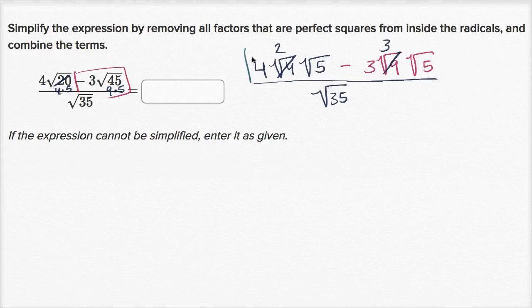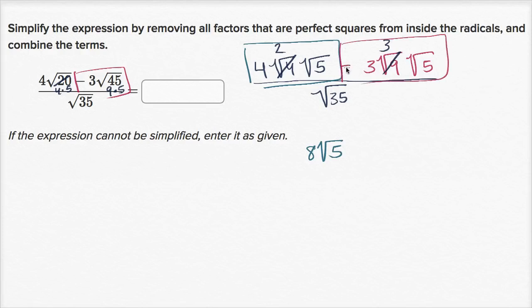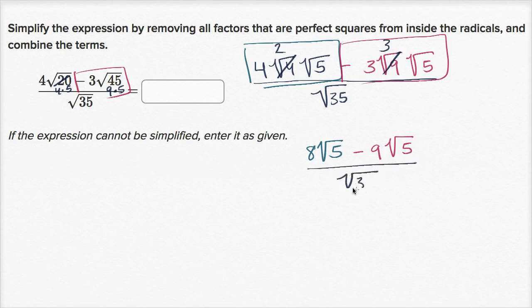This part right over here is going to be four times two times the square root of five, so it's going to be eight square roots of five. And then this part over here is going to be minus three times three times the square root of five, so minus nine square roots of five. And all of that is going to be over the square root of 35.